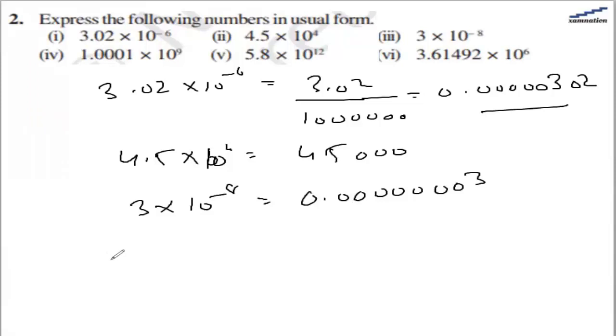In the fourth part, we have 1.0001 × 10^9, so that will be 1,000,100,000.